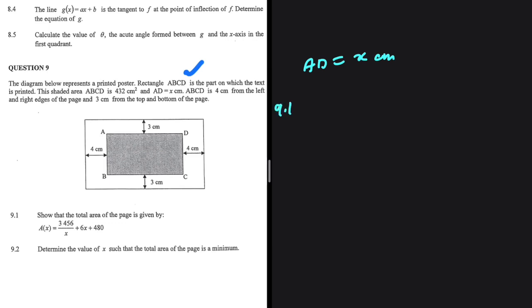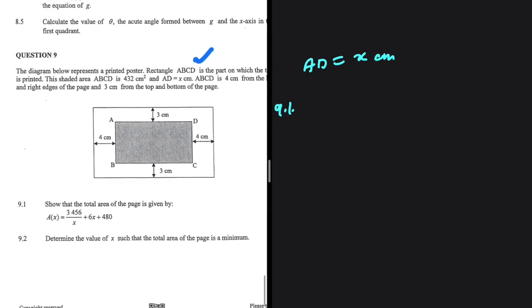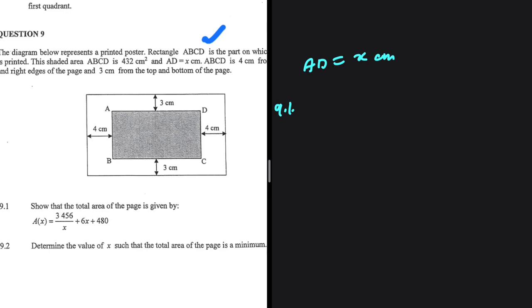Alright, in the first question 9.1 we're supposed to show that the total area of the page is given by A equals 3456 divided by x plus 6x plus 480. Let's go ahead and make sense of that.